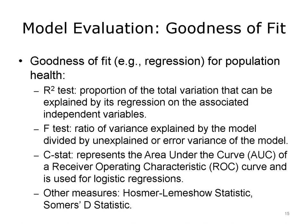Different statistical methods are evaluated by different approaches. In the case of regression models, their goodness of fit can be evaluated by various statistical scores, such as R-squared, F-test, C-stat, and others. Adjusted R-squared explains the proportion of the total variation that can be explained by its regression on the associated independent variables. R-squared ranges between 0 and 1, and in general, the higher the R-squared number, the better the model fits the data. However, R-squared cannot determine whether the coefficient estimates and predictions are biased.